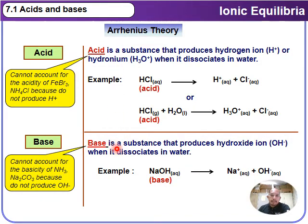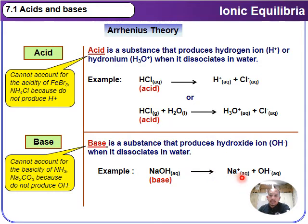According to Arrhenius, a base is a substance that produces a hydroxide ion, OH⁻, when it dissociates in water. For example, NaOH in aqueous solution completely produces Na⁺(aq) and OH⁻(aq). However, the Arrhenius theory cannot account for the basicity of compounds such as ammonia, Na₂CO₃ (sodium carbonate), because they do not produce any OH⁻ ion.